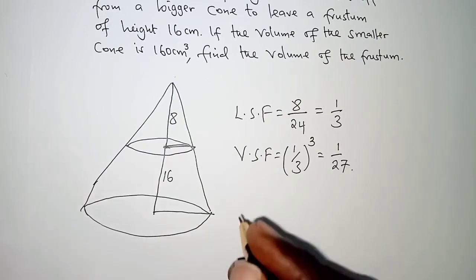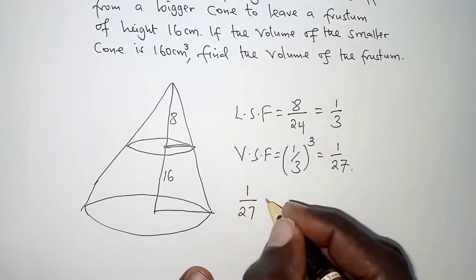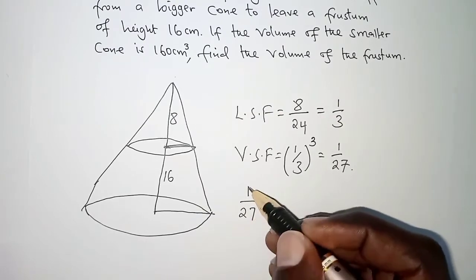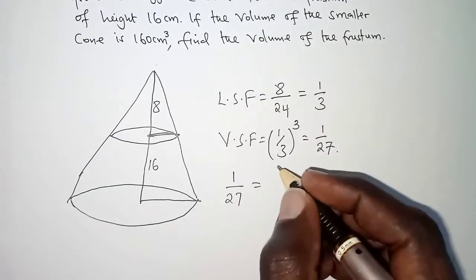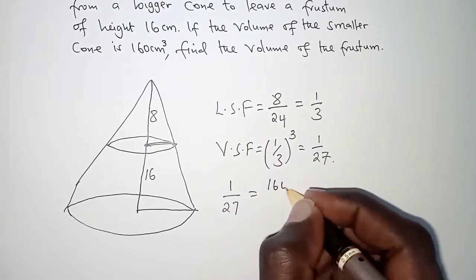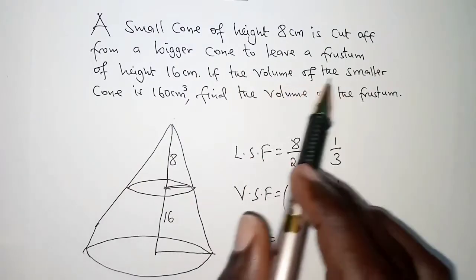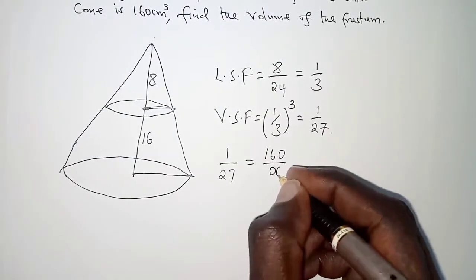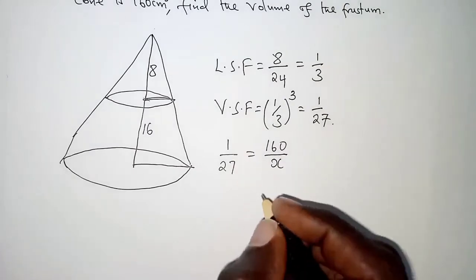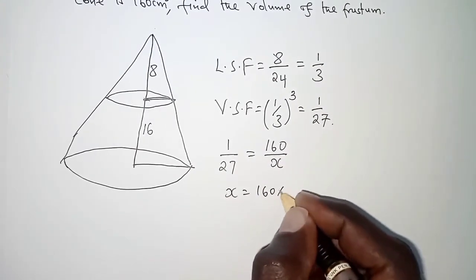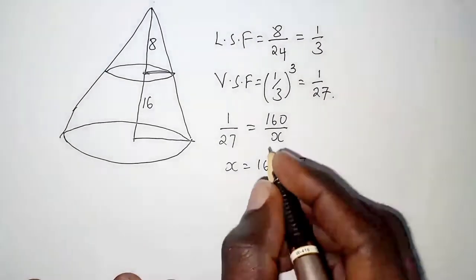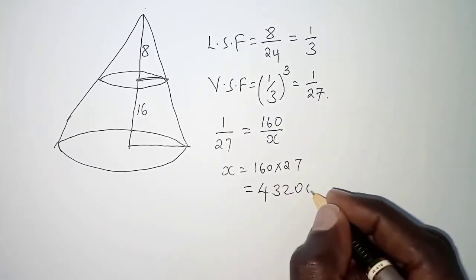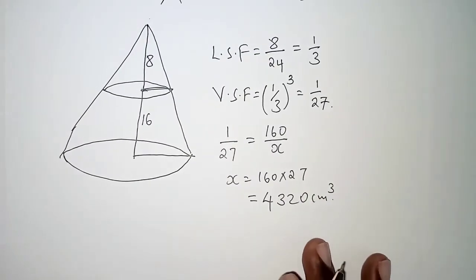With the volume scale factor, we can say: 1 over 27 equals smaller over bigger. Since 1 is smaller than 27, the smaller volume is 160 cubic centimeters and the bigger cone's volume is x. Cross multiplying gives x equals 160 times 27, which from the calculator is 4320 cubic centimeters. That is the volume of the bigger cone.